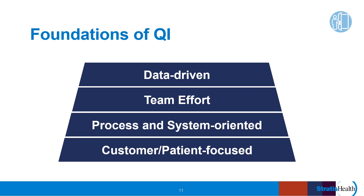As we said before, every system is perfectly designed to produce exactly the results it produces. One of the gurus of quality, Dr. William Deming, tells us that 85% or more of quality problems can be tracked back to a process or system problem. QI helps us to step back and determine where those missteps are occurring, understand why they are occurring, and take steps to help staff avoid them.